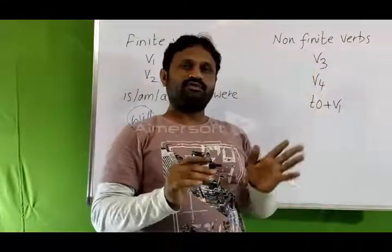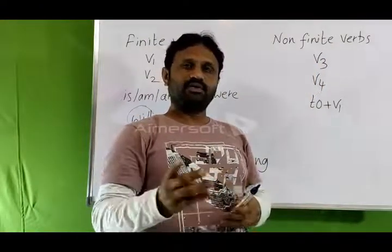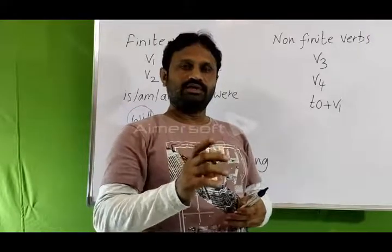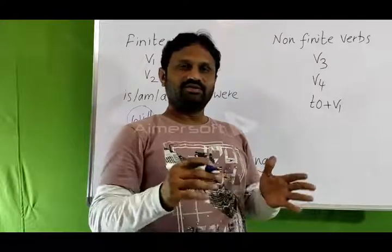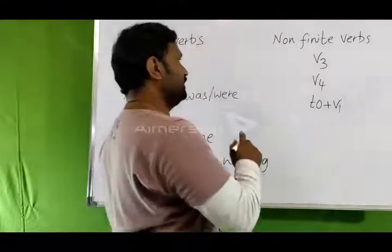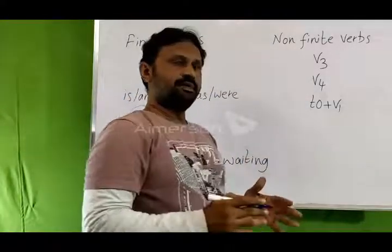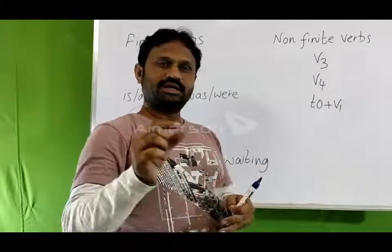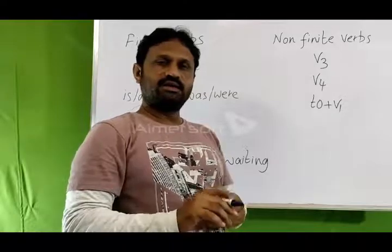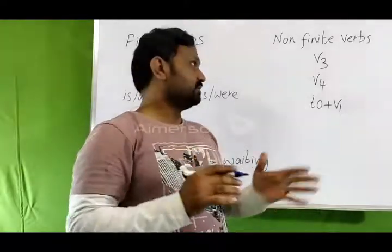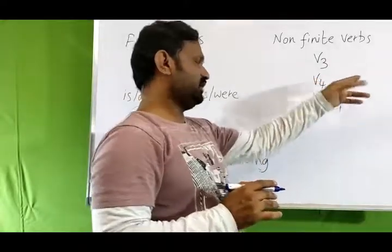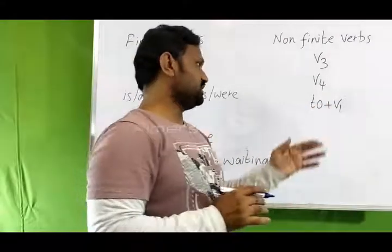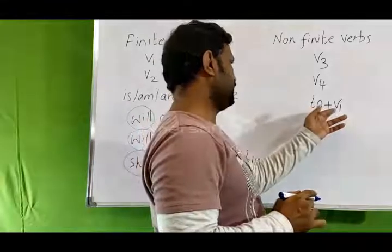Now, non-finite verbs. V3 form — the third form of the verb. For example: write, wrote, written; think, thought, thought. The third form of the verb always stands as a non-finite verb. Next, V4 — the present participle, which is V1 plus -ing. For example: write, wrote, written, writing. 'Writing' is the fourth form of the verb and it is also a non-finite verb. And finally, to + V1, the to-infinitive, is also a non-finite verb.